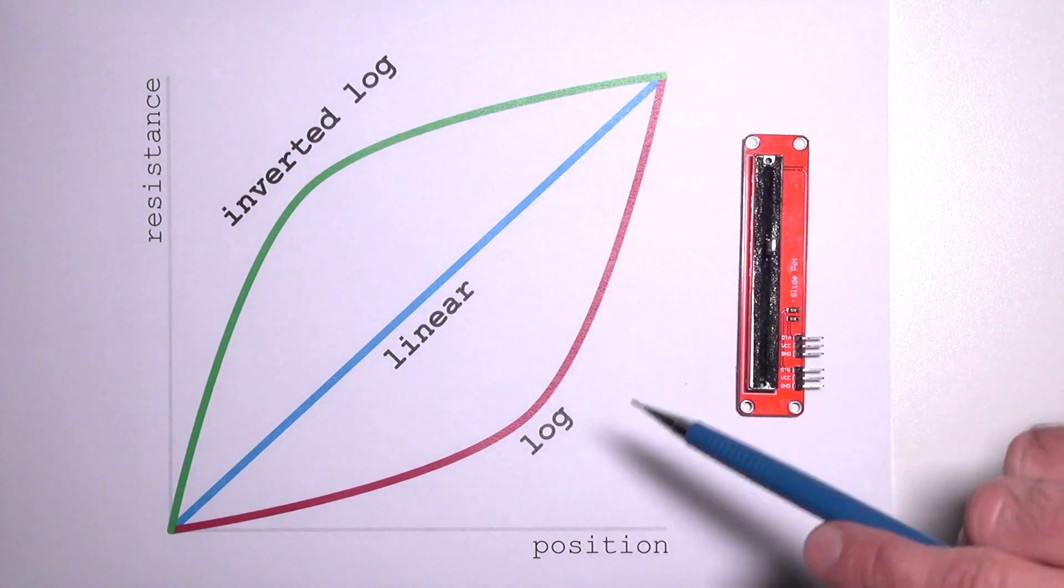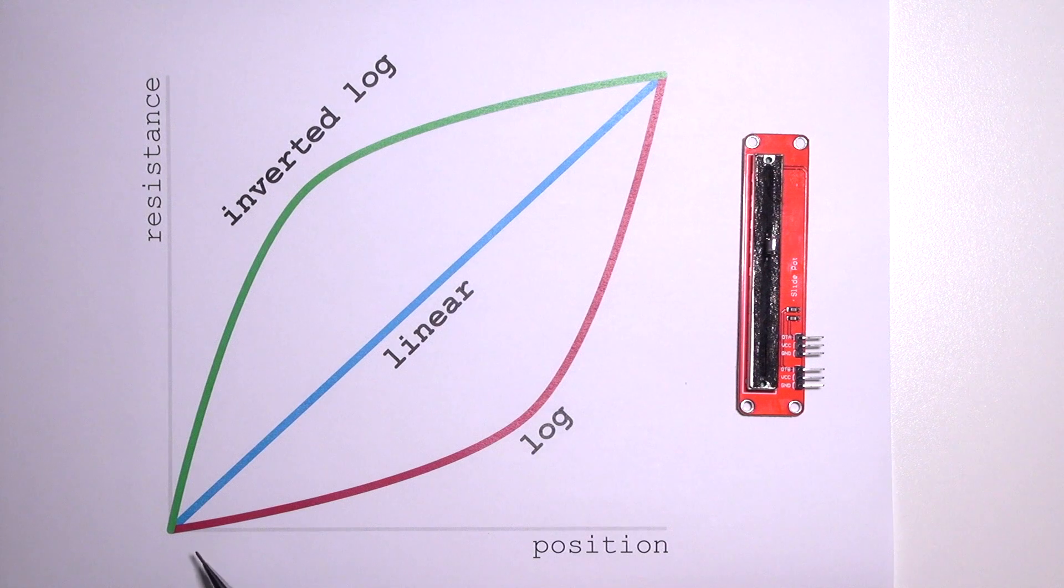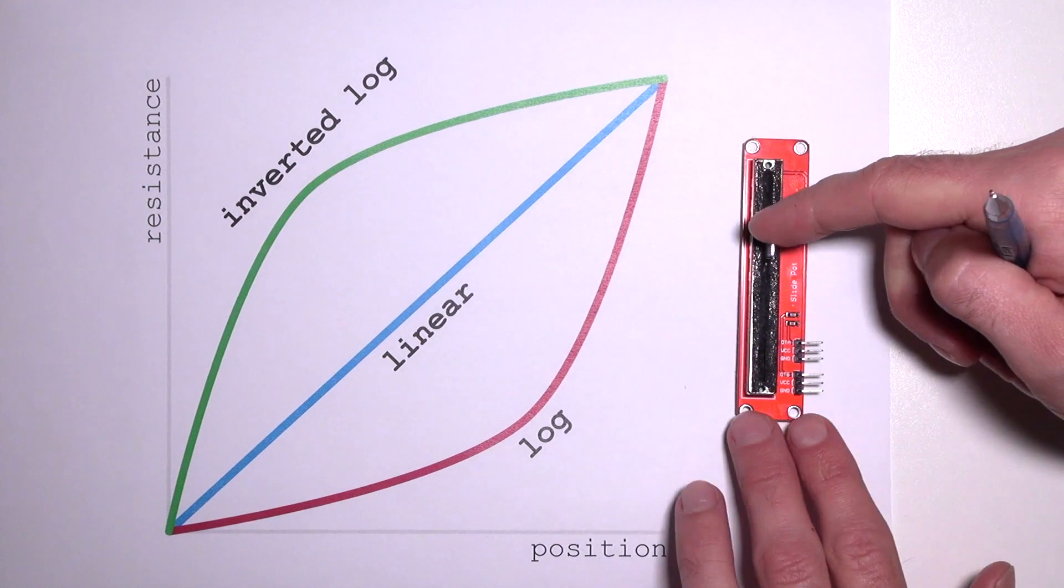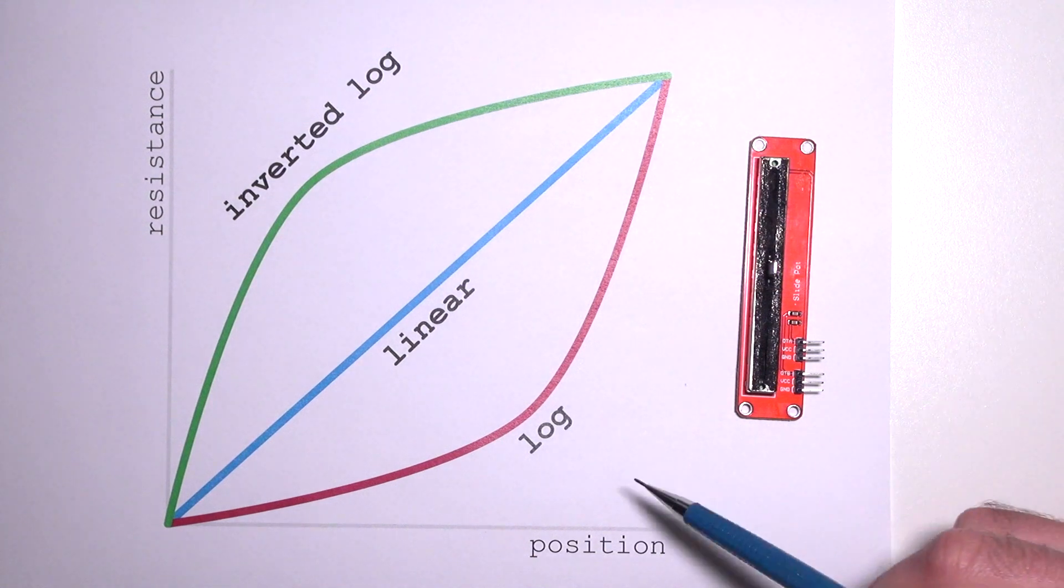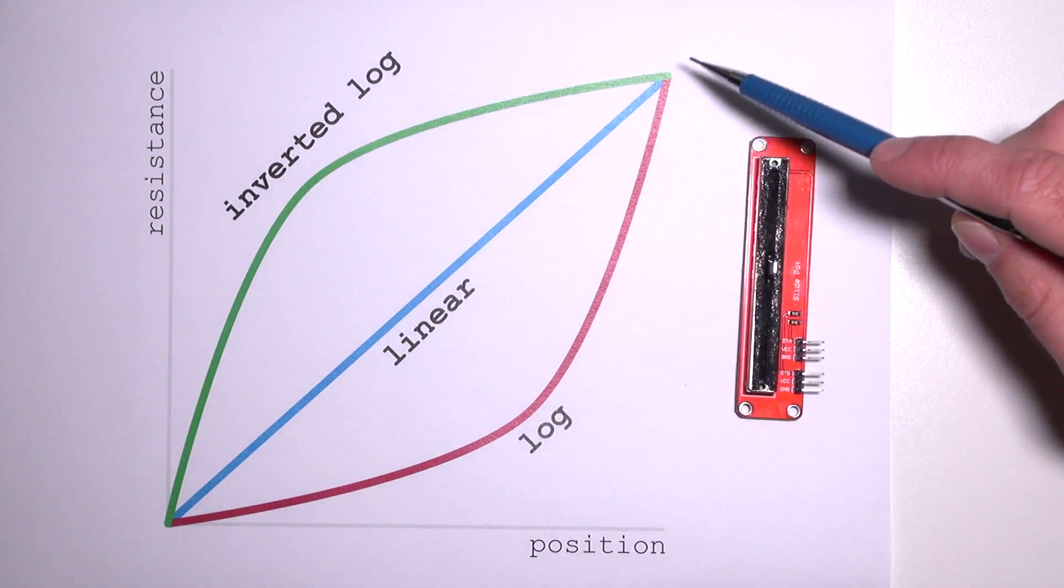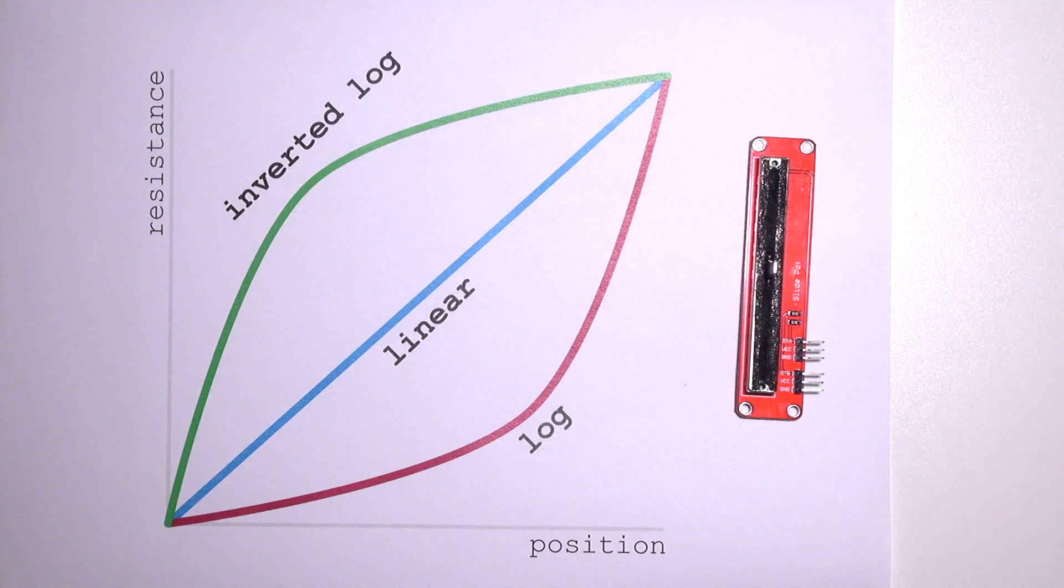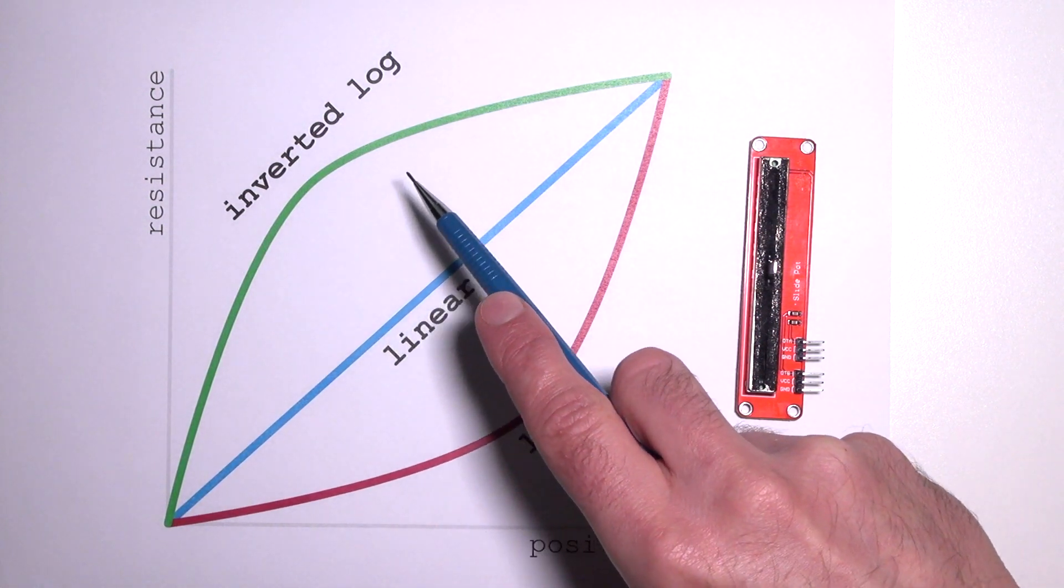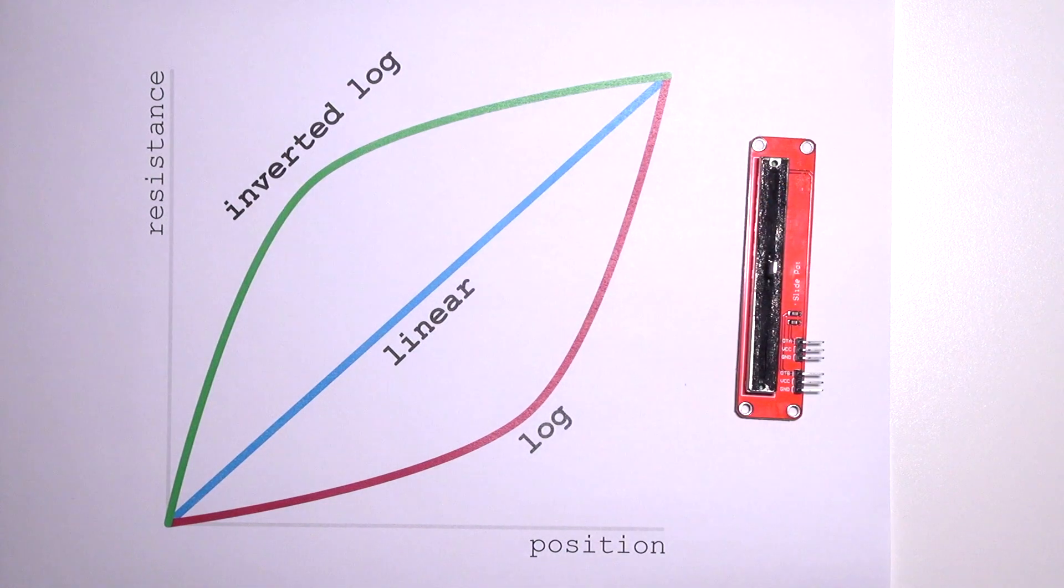If we have a look at the logarithmic scale, we see that the resistance goes slower while the position is getting higher. At a certain time, which is when the slider is at the center, you see that the resistance is increasing dramatically. Basically the inverted log is the opposite. The resistance increases very fast till the center and then gets less fast, slower and slower.